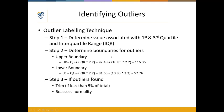Step two is to determine the upper and lower boundaries for outliers. For the upper boundary, we take the raw score associated with the third quartile and add the interquartile range multiplied by 2.2: 92.48 plus (10.85 × 2.2) equals 116.35. This is beyond our feasible range since the highest possible score with this tool is 100, so we should have no upper boundary outliers. Any value greater than 116.35 would theoretically be considered an outlier.